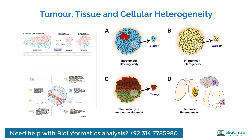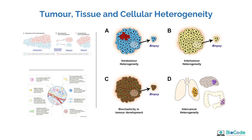Before delving into Bulk RNA sequencing versus Single Cell RNA sequencing, we need to understand why we actually need these two different technologies to analyze the same molecule, which is RNA. A tissue has multiple cells working simultaneously for their own functionalities. At a single location there could be multiple immune cells and multiple tissue cells performing different functions, and when a disease occurs in that particular region, it leads to further gene expression changes on the cellular level which change the overall topology, shape, and functionality of that tissue.